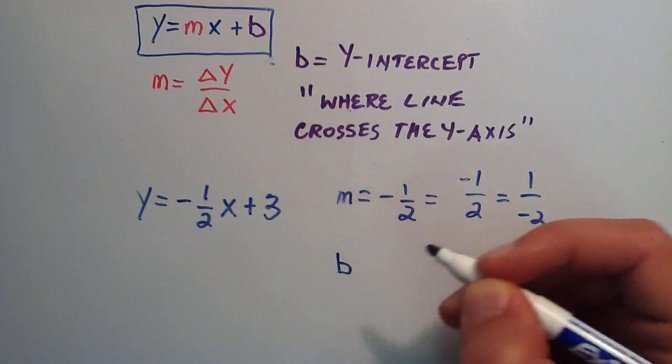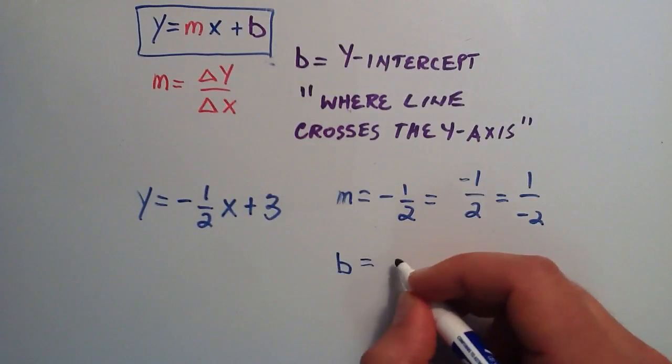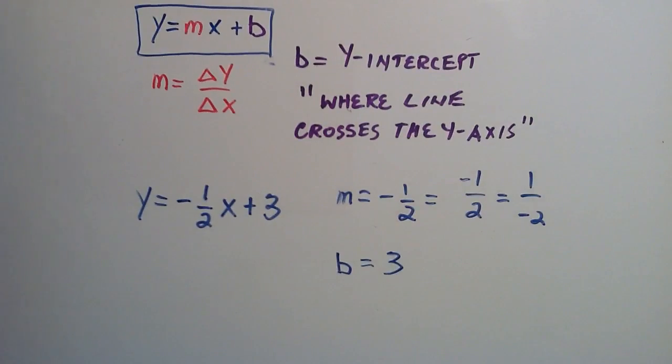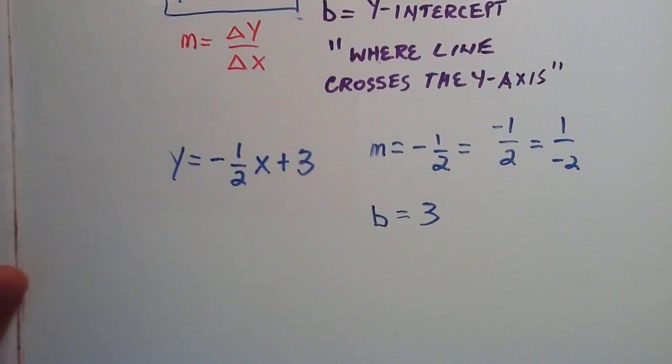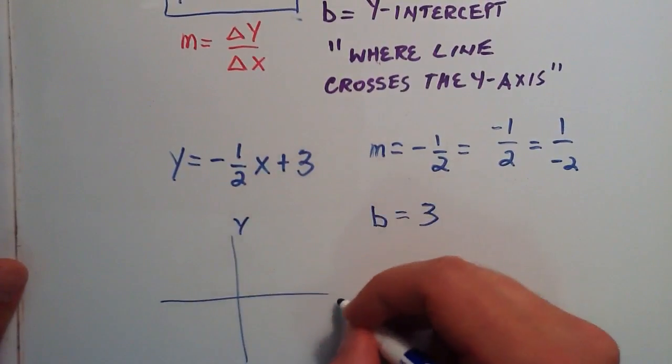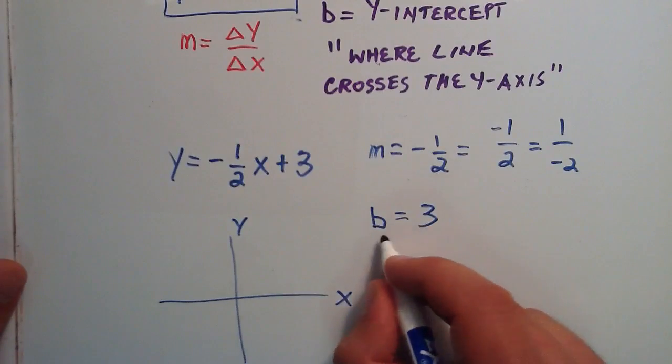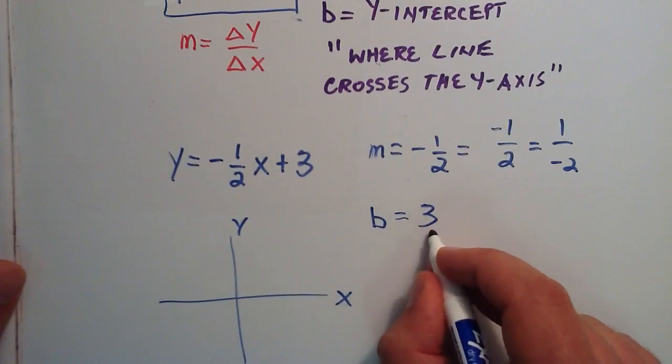And then we want to find our y-intercept, and it's simply the positive three here. So our y-intercept is a three. And now we just go ahead and sketch it real quick. So we've got our y-axis. We've got our x-axis. This time, we go up three units in the y-direction, since our intercept is three.